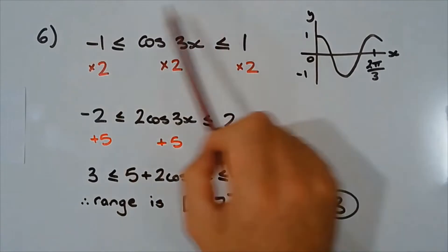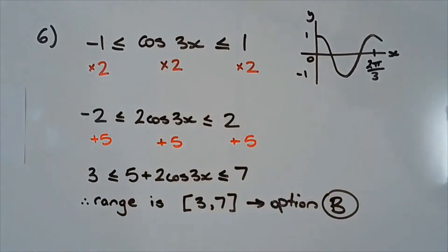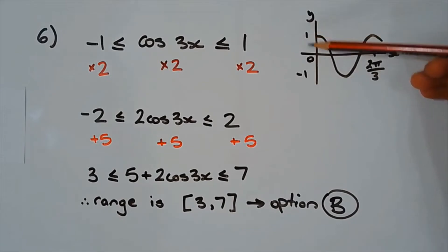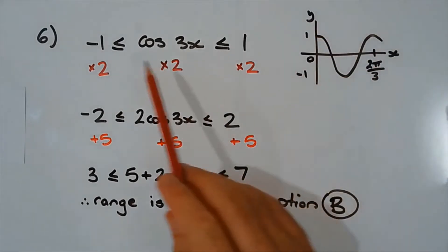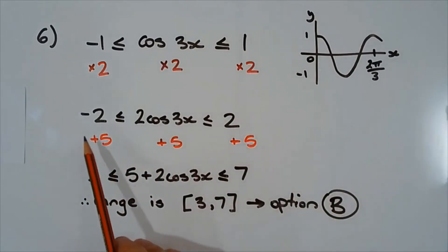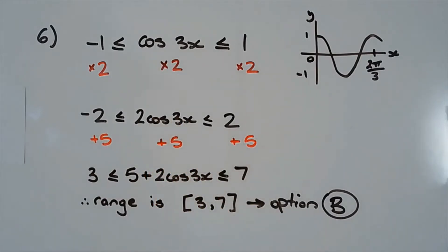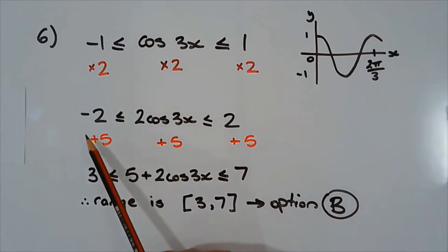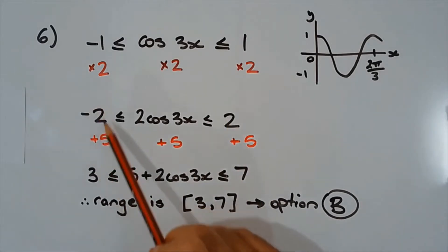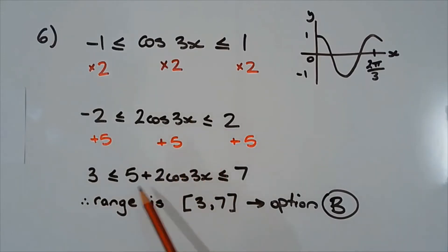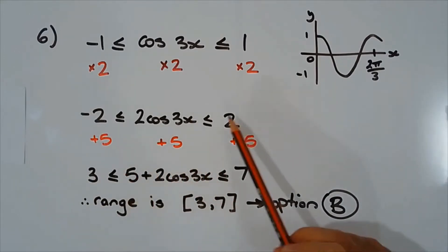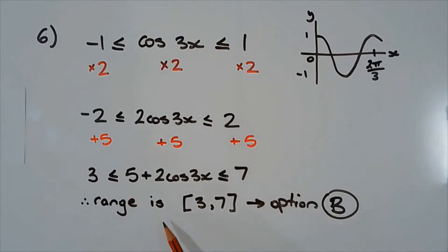Multiplying cos 3x by 2 dilates the curve by a factor of 2, so the range becomes from negative 2 to positive 2. Then adding 5 translates the curve upward by 5 units. Adding 5 to each term of the inequality: negative 2 plus 5 equals 3, and 2 plus 5 equals 7. So the range is between 3 and 7, including the endpoints. The answer is option B.